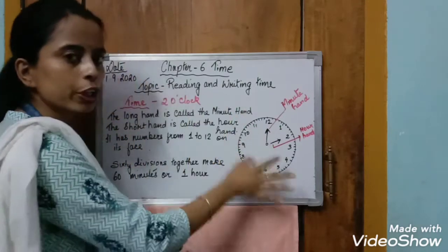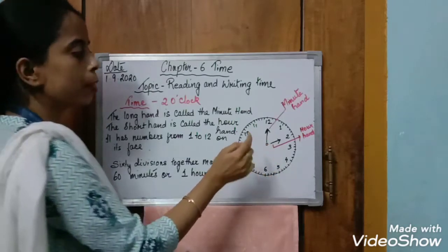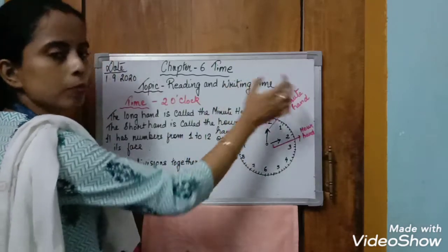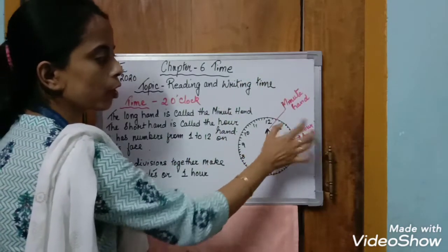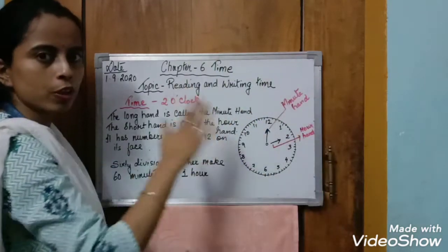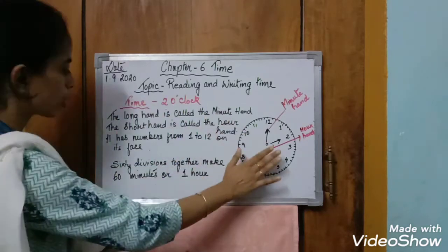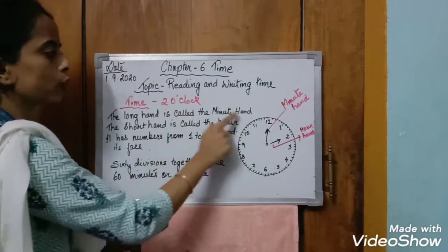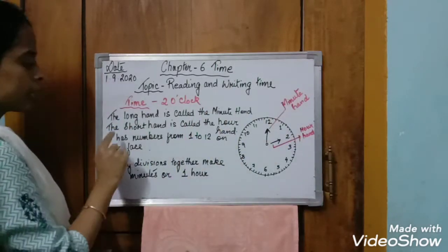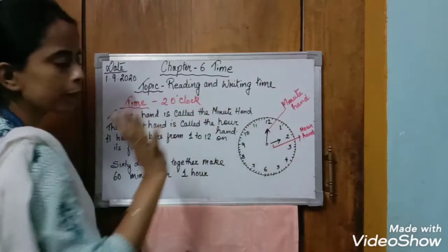We call it two o'clock or two hours. The longer hand shows minutes — it is the minute hand — and the short hand is the hour hand. The face of the clock we call it the dial. So here the time is showing two o'clock. The long hand is called the minute hand and the short hand is called the hour hand. The clock has numbers from one to twelve on its face.